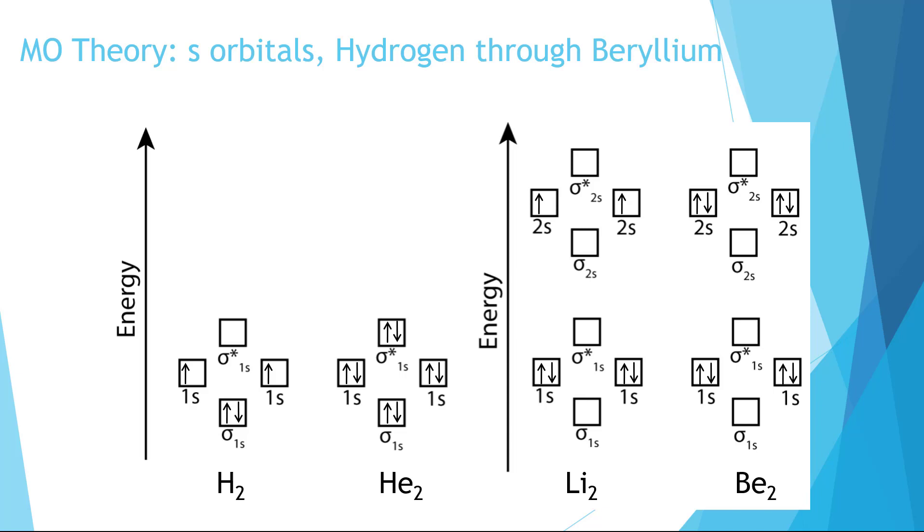We now have three electrons from each atom, which gives us six total. And so we'll fill in from low to high until we've used up our six electrons.